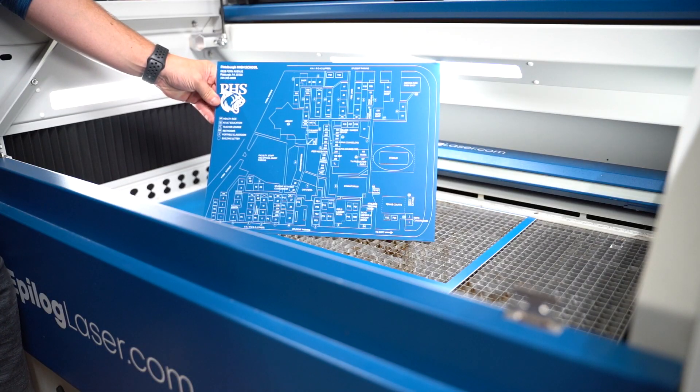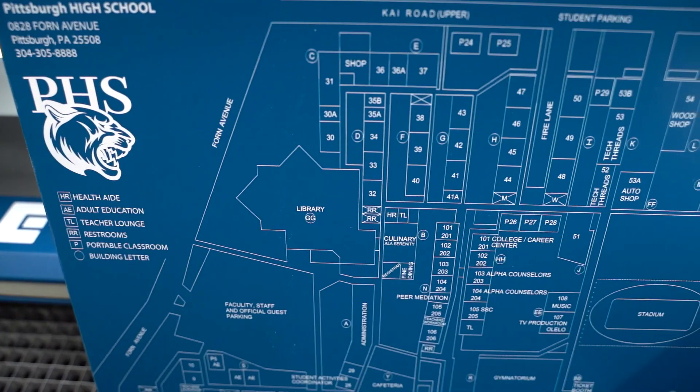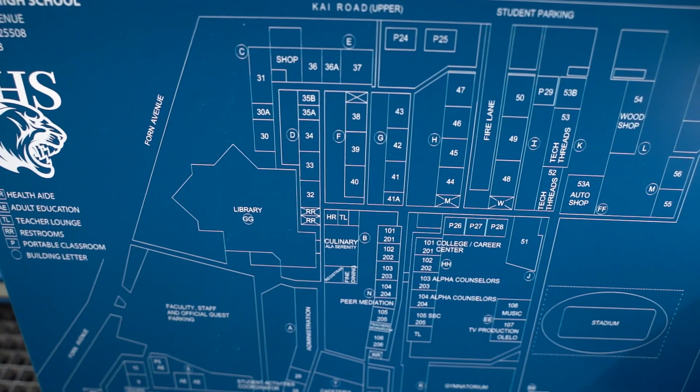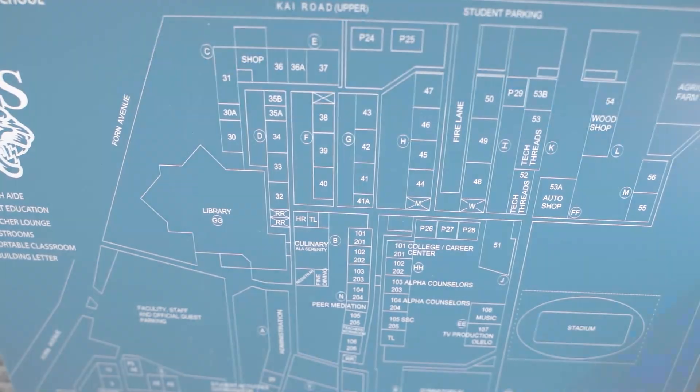With some easy color mapping and preset material settings, we have a professional campus map ready for the front entrance of a high school to help visitors and students alike. Easily made with an Epilogue laser.